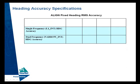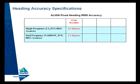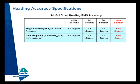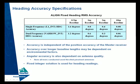Align specified RMS accuracy figures are defined for various baselines based on single or optional dual frequency operation. For the 50 cm baseline, single frequency offers 1.6 degrees RMS while dual frequency offers 1.2 degrees RMS. For the 1 m baseline, single frequency offers 0.8 degrees RMS while dual frequency offers 0.6 degrees RMS. On a 2 m baseline, these figures decrease to 0.4 degrees and 0.3 degrees for single and dual frequency respectively. On a 10 m baseline, this drops dramatically to 0.08 degrees and 0.06 degrees for single and dual frequency respectively. The accuracy figures are independent of the position accuracy of the master receiver, and accuracies over longer baseline lengths may be dependent on environmental factors. The angular accuracy is also dependent on the antenna quality, and only a fixed integer solution is used in the heading output.